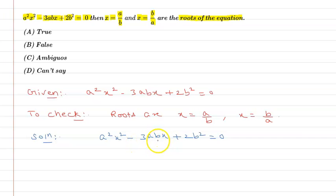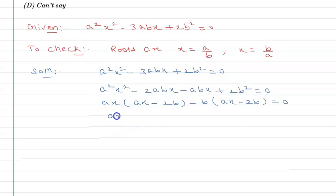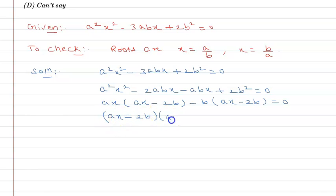I will factor it: a²x² - 2abx - abx + 2b² = 0, which gives ax(ax - 2b) - b(ax - 2b) = 0, so (ax - 2b)(ax - b) = 0.